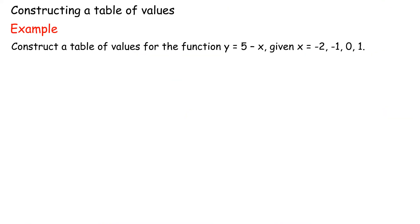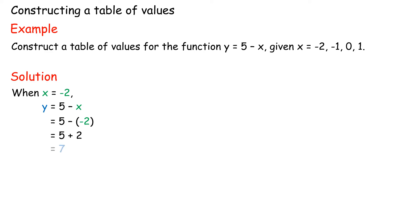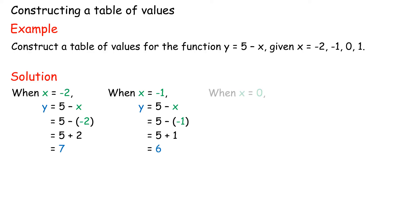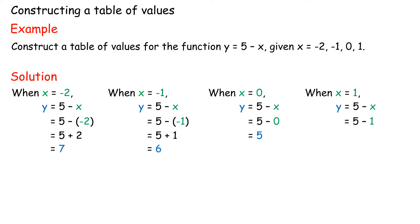Example: Construct a table of values for the function y equals 5 minus x, given x equals negative 2, negative 1, 0, and 1. When x equals negative 2, y equals 5 minus negative 2 equals 7. When x equals negative 1, y equals 5 minus negative 1 equals 6. When x equals 0, y equals 5. When x equals 1, y equals 5 minus 1 equals 4.